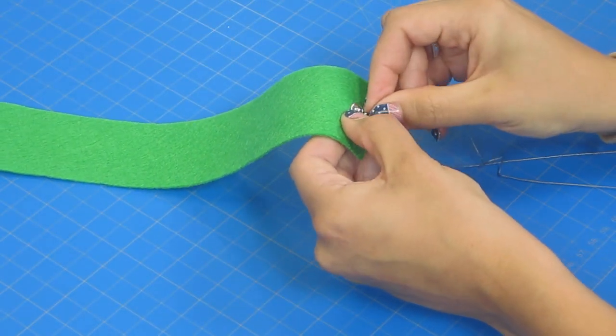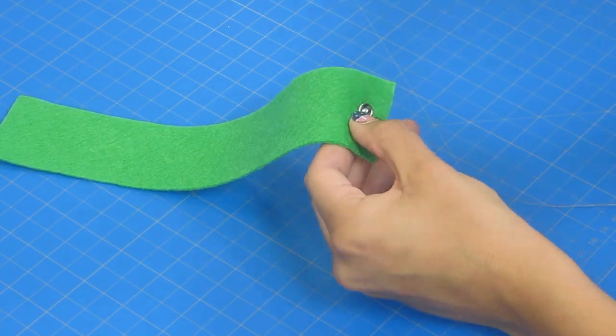First you will sew on your outie snap. Loop the thread three times through each hole to secure.